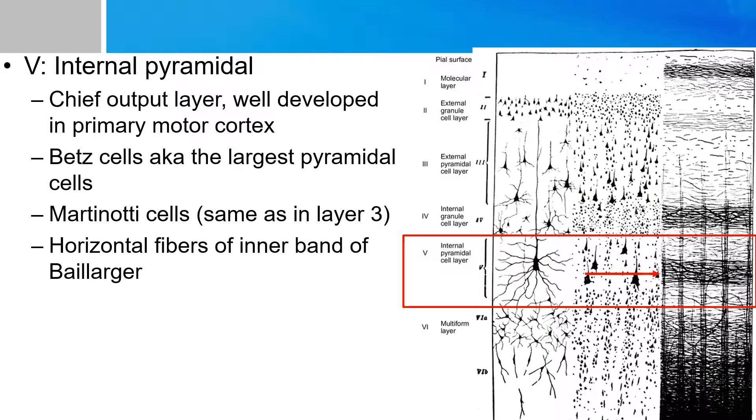Layer five is the chief output layer and it is the main motor efferent to the brain stem and spinal cord. And hence this layer is enlarged in the motor cortex. The major cell type of this layer is called the Betz cells. And it is basically the largest pyramidal cells in the body. This layer also contains the Martinotti cells that is mentioned in layer three that is responsible for modulating excitability of the cortex. This layer also has the horizontal fibers and is also known as the inner band of Baillarger.